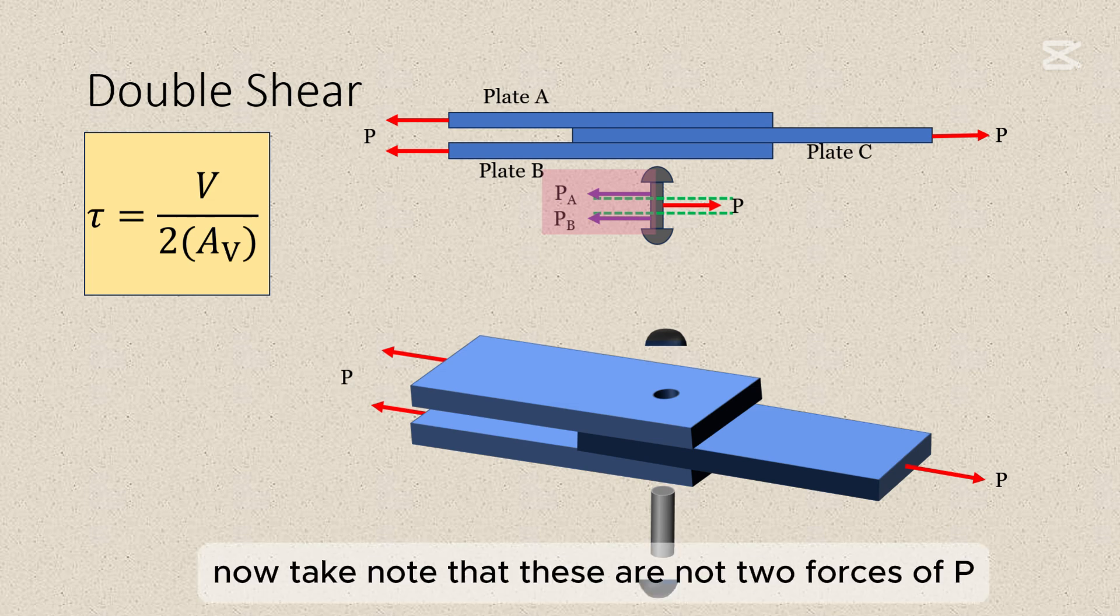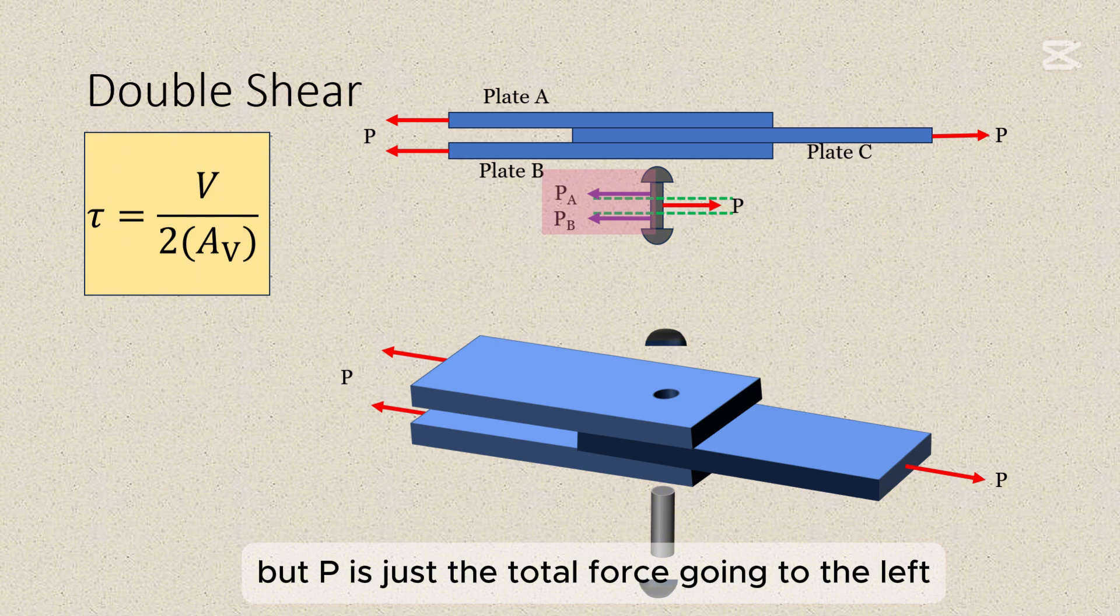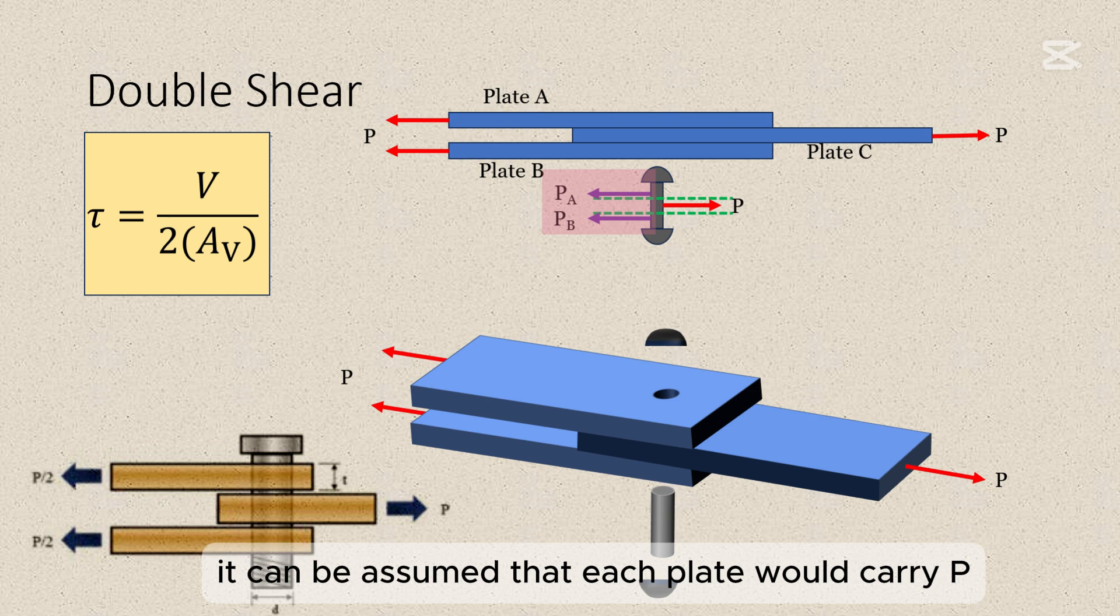Now take note that these are not two forces of P, but P is just the total force going to the left, and so if the loading is symmetrical, it can be assumed that each plate would carry P over 2, or half of P.